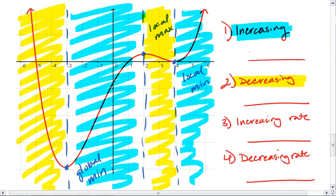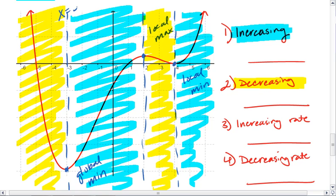So the intervals where I'm increasing are from x equals negative 3 to positive 2, and then also from x equals positive 4 to infinity.